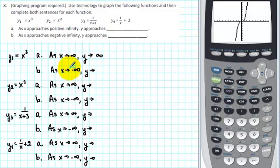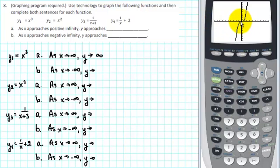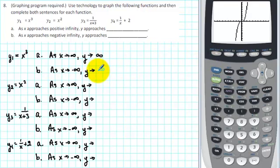In part b, as x goes to negative infinity, y goes to blank. As x goes to negative infinity, we're investigating the left end behavior. As we move to the left, we trace the function and see that it goes down, decreasing without boundary. That means the y values are approaching negative infinity. So as x goes to negative infinity, y goes to negative infinity as well.